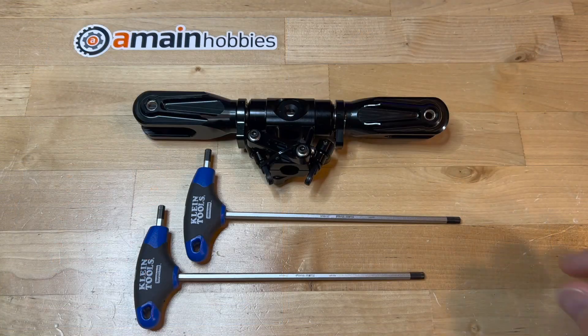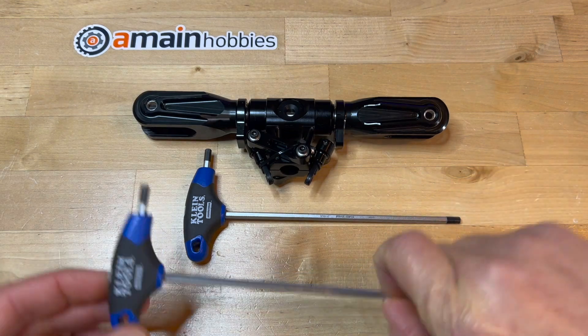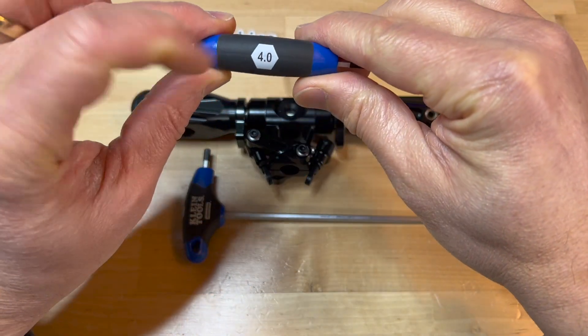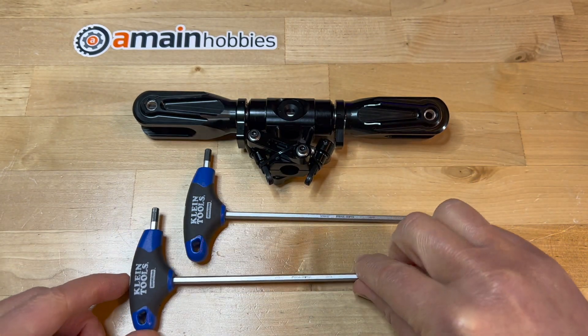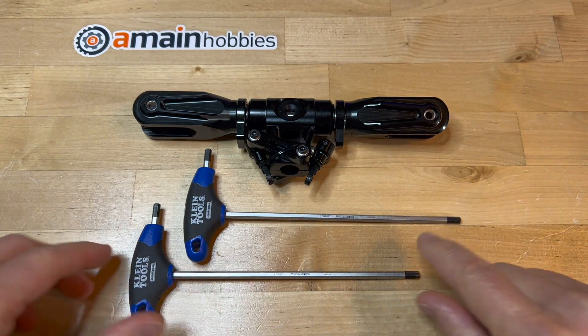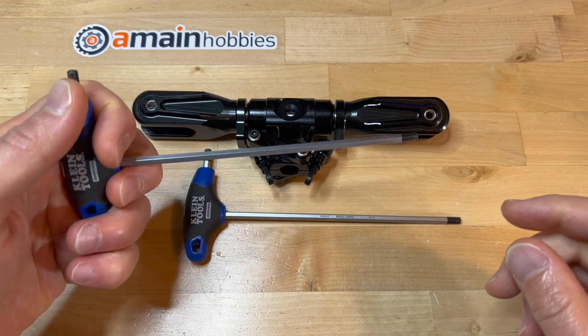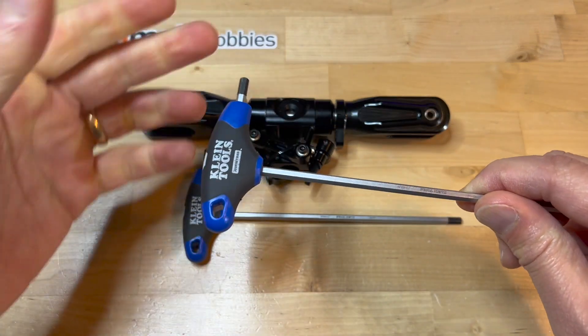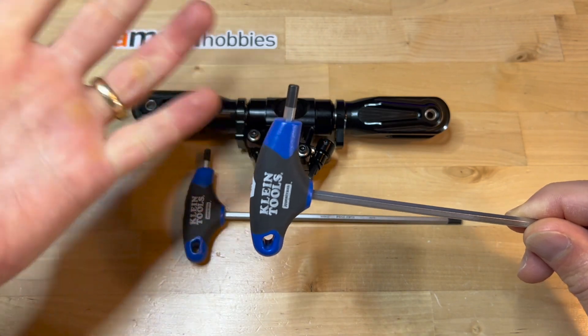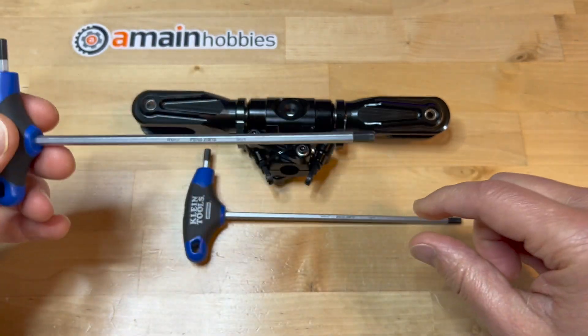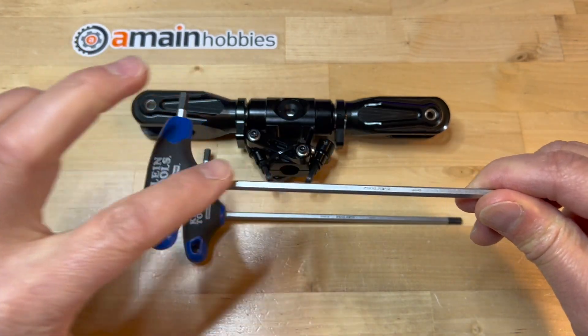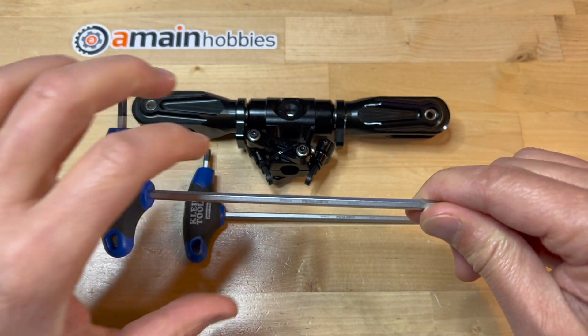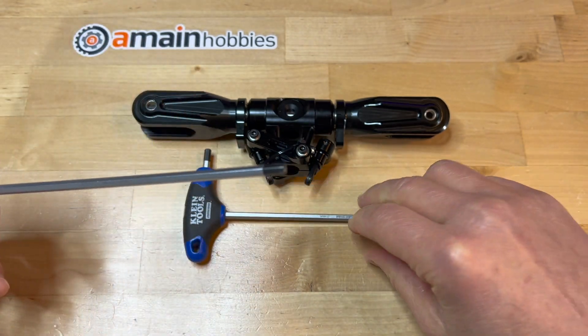For assembling the head you'll need four millimeter hex drivers. My preference is to use T-handle drivers because it makes it a lot easier on my hands. I'm a 50 year old guy with arthritis, so it makes it easier to use T-handles compared to regular drivers.